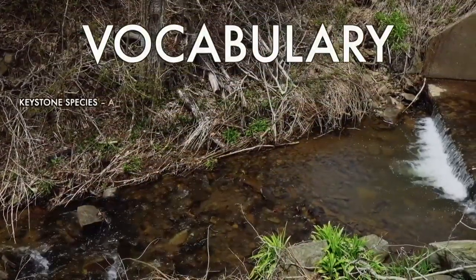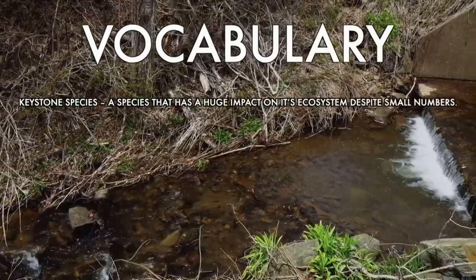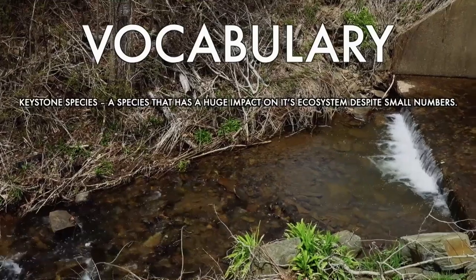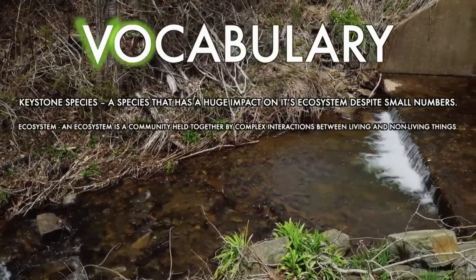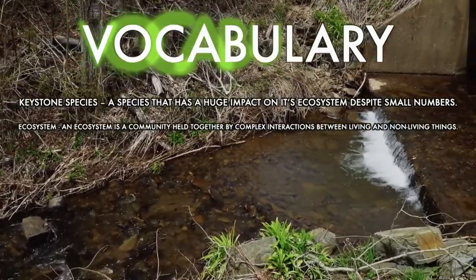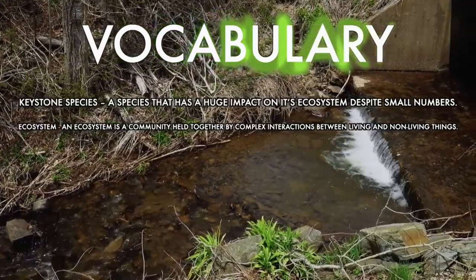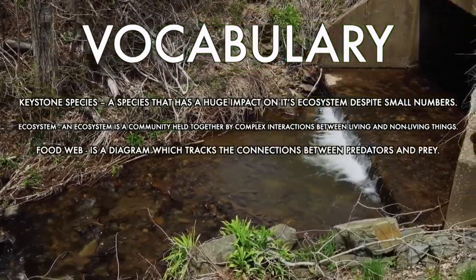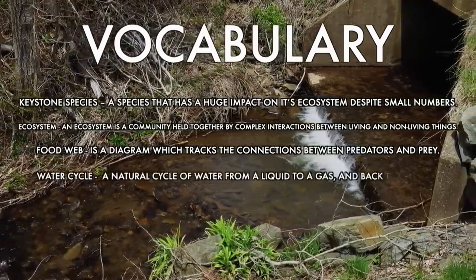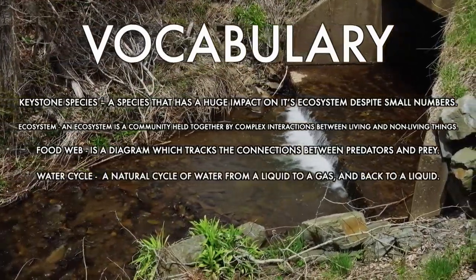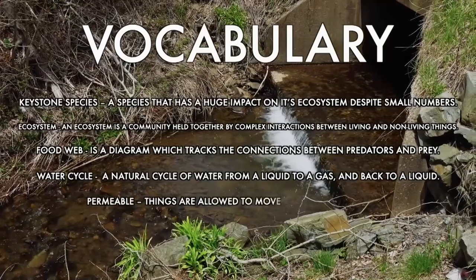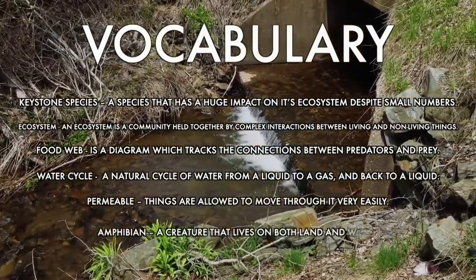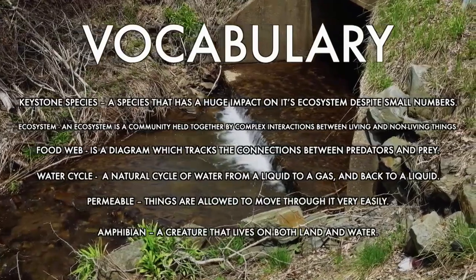Here's some vocabulary we need to know. A keystone species is a species that has a huge impact on its ecosystem, despite small numbers. An ecosystem is a community held together by complex interactions between living and non-living things. A food web is a diagram which tracks the connections between predators and prey. The water cycle is a natural cycle of water from liquid to a gas and back to a liquid. Permeable means that things are allowed to move through it very easily. And an amphibian is a creature that lives on both land and water.